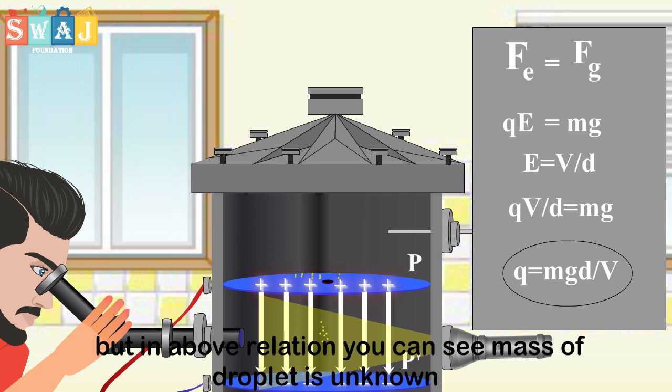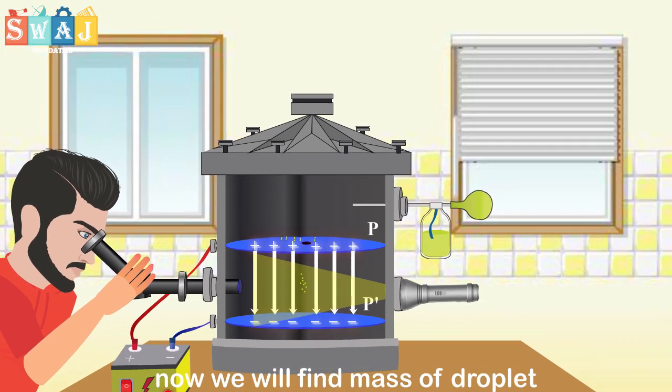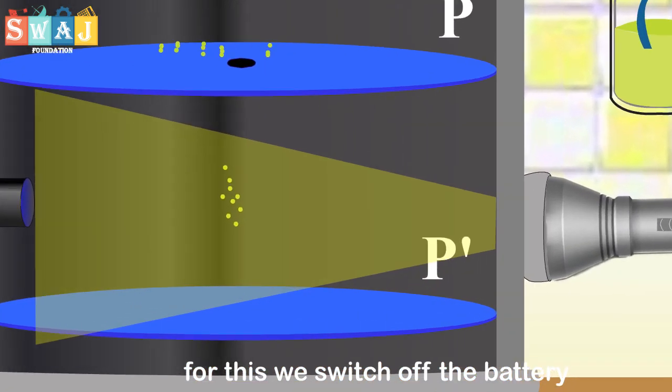But in above relation, you can see mass of droplet is unknown. Now we will find mass of droplet. For this, we switch off the battery.